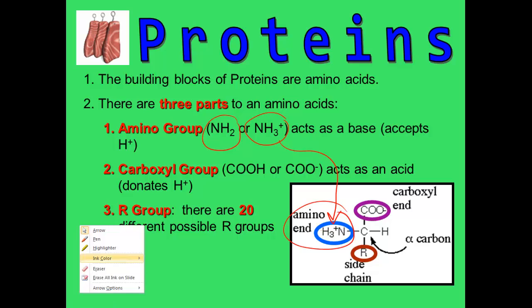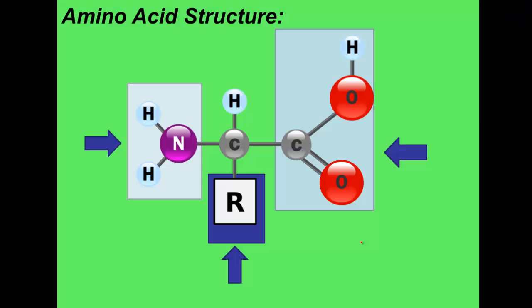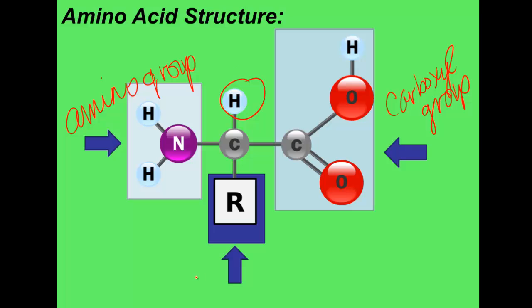The third group you'll need to recognize is the R group. R just means there are 20 different variations of other things that can be attached to the central carbon. That carbon attaches to four things: the amino group, the carboxyl group, a hydrogen, and the R group.